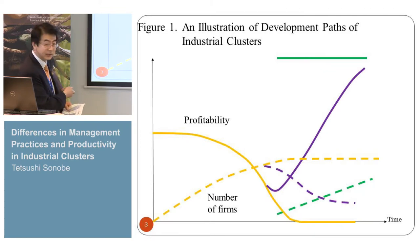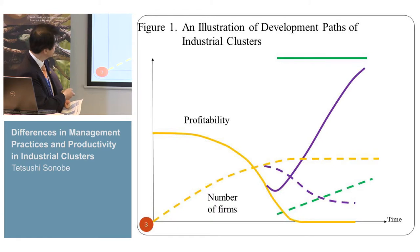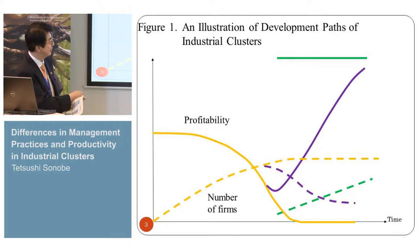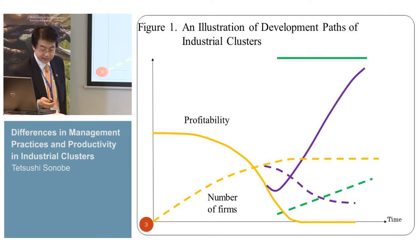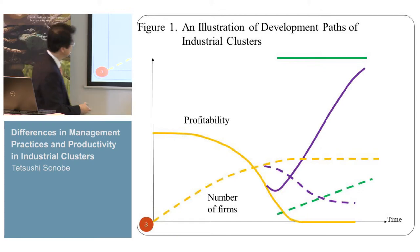Then gradually the market is saturated, because it is not exportable quality. So profitability will decline. As the number of producers increases, profitability becomes eventually zero, and then no more new entry. This is the first type. The second type is like a V-shaped development path.